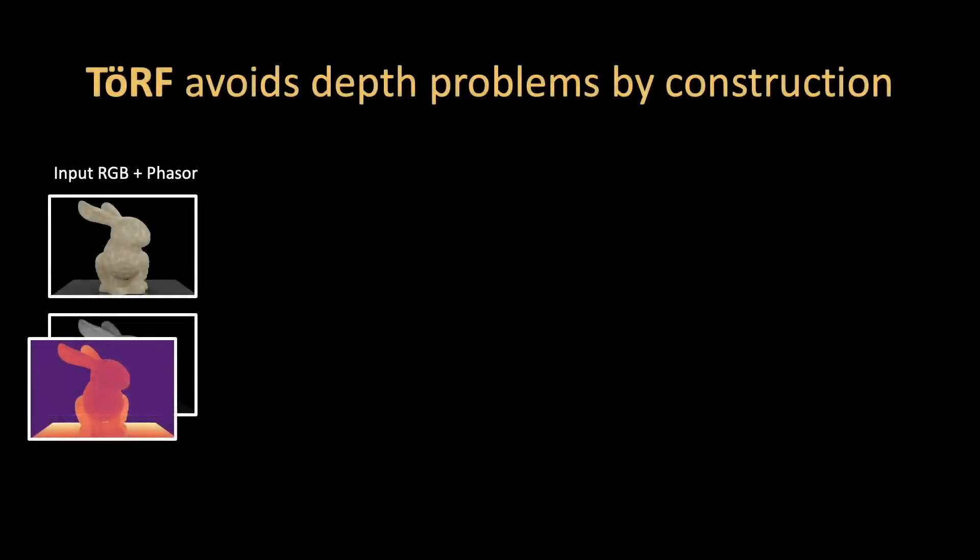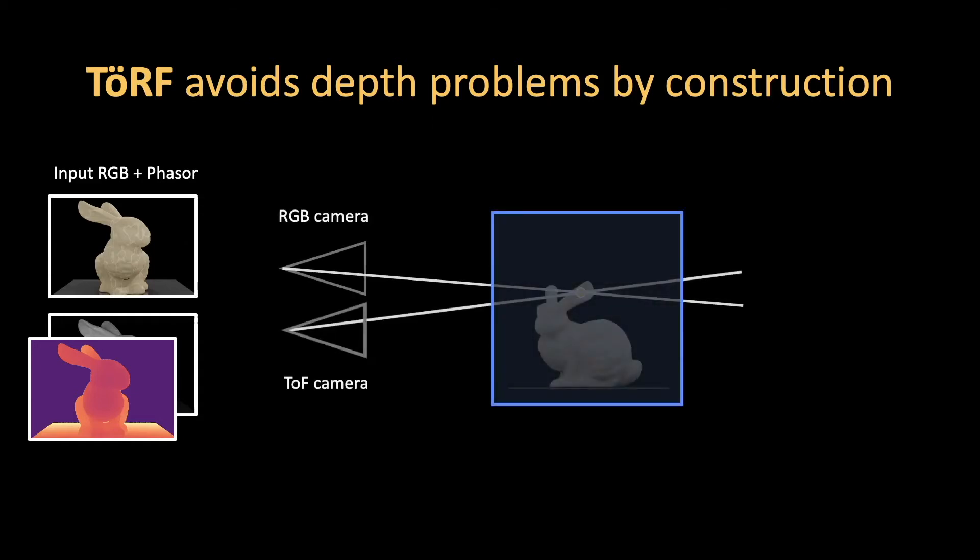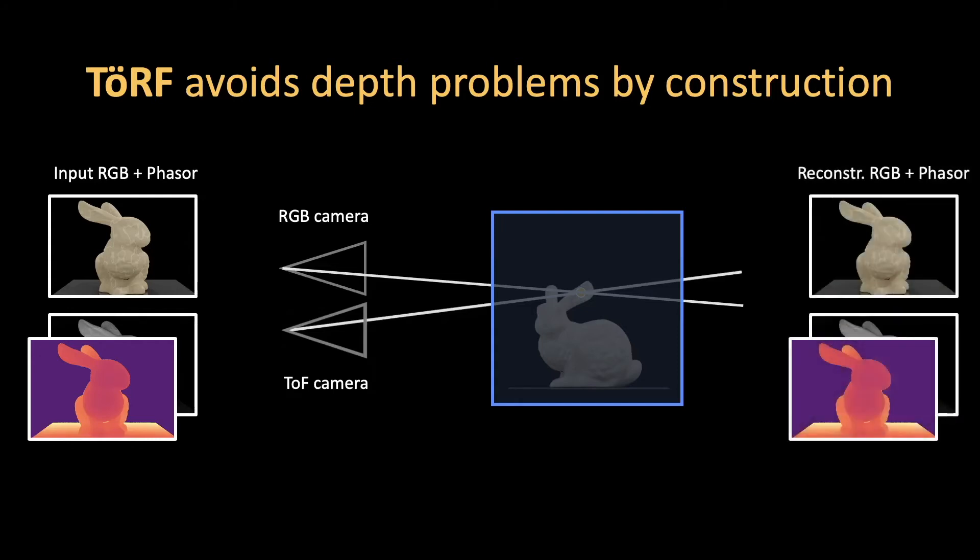Turf avoids problems with time-of-flight depth by construction. As input, we take monocular RGB and phaser videos. Then, our goal is to recover a dynamic radiance field from these inputs using the color and phaser physically-based image formation models that we described earlier. We optimize this dynamic radiance field by comparing the predicted images to the input, via a weighted L2 reconstruction loss. Given enough measurements, we can recover an accurate dynamic volume.